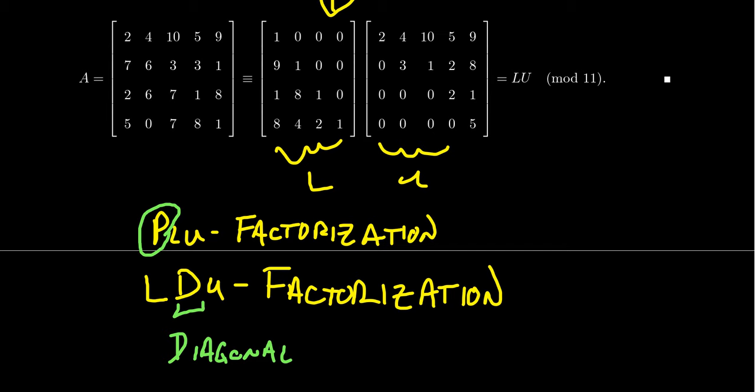because to get the unit lower triangular matrix, we do not need to have any scaling whatsoever. Now, if you did scaling, you can factor them out of the matrix L to make a unit lower triangular, or in fact,